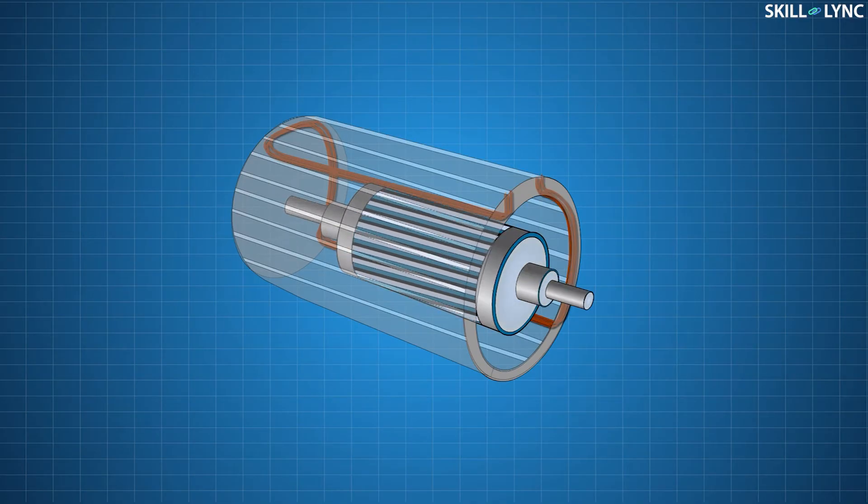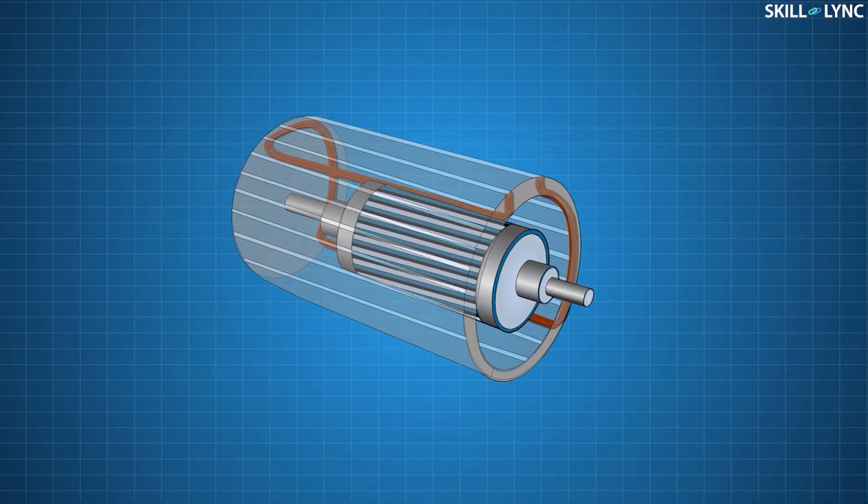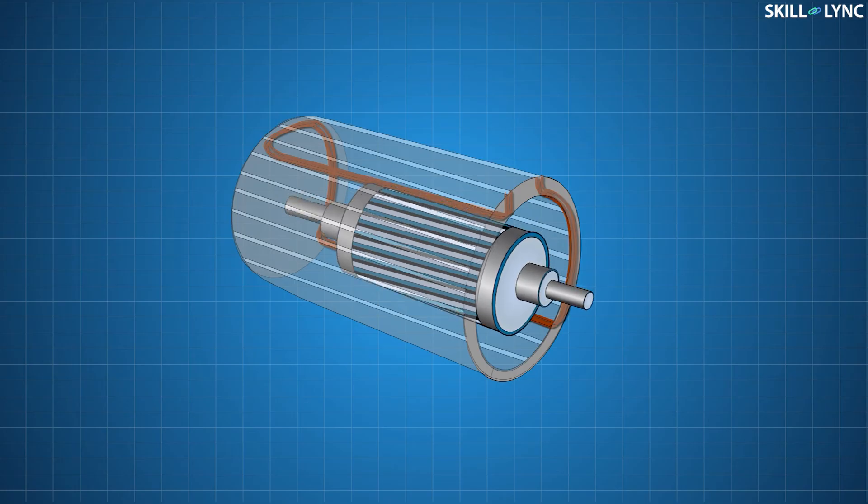Now, according to Lenz's law, the electrical and magnetic field will develop a force by which the rotor must rotate. However, that does not happen. The alternating magnetic field produced in the rotor makes the rotor instead vibrate at a fixed position.